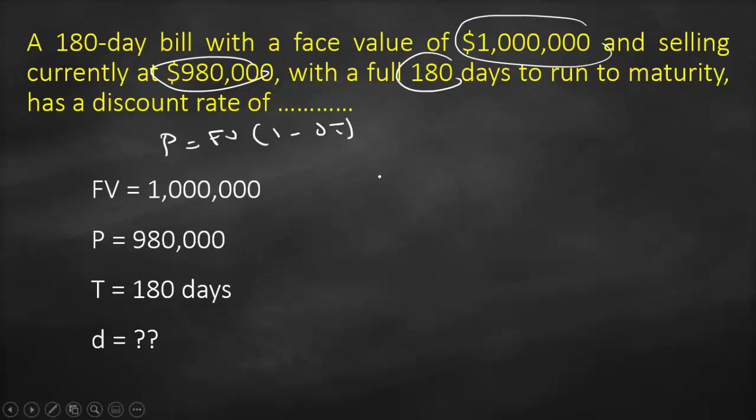Consequently, our discount rate will be 1 minus principle divided by future value, all of this divided by T. Remember our discount rate or any interest rate is usually expressed as per annum, therefore we must have the same time unit.